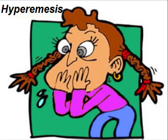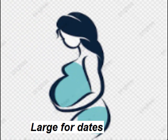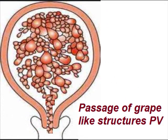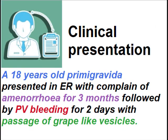There is hyperemesis because of excessive amounts of hCG. The patient may present with large for dates — the uterus is larger than the actual gestational age. A common presentation is passage of grape-like structures per vaginum. This is the commonest clinical presentation.